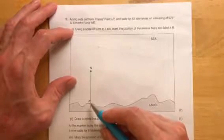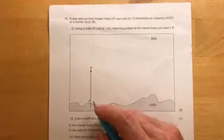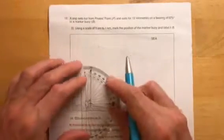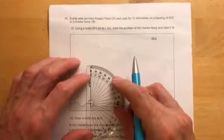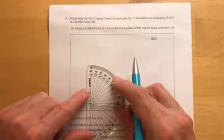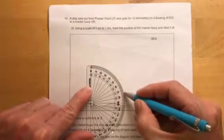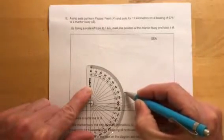It's from P, sets out for 12 kilometres on a bearing of 75 degrees. From North, 75 degrees, so we're going to line that point up with our point, 75 degrees around here, all the way around here.